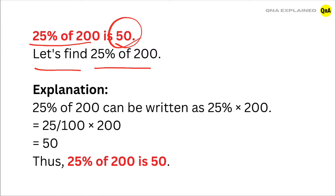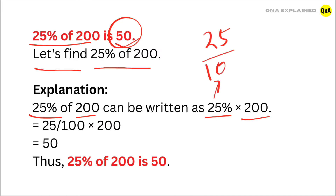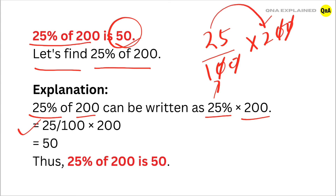25% of 200 can be written as 25% multiplied by 200. 25% is written as 25 upon 100, so we have 25 upon 100 multiplied by 200. Let's solve it. First, cancel out the zeros — we have 25 multiplied by 2 is equal to 50. Thus 25% of 200 is equal to 50.